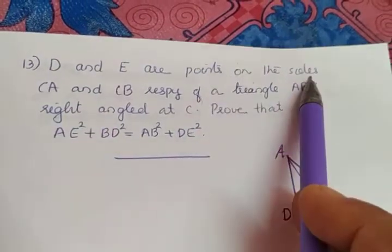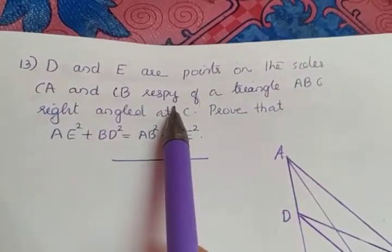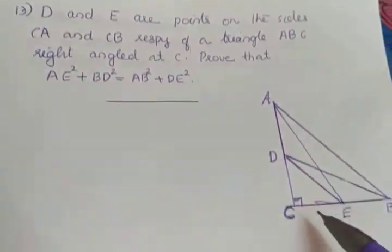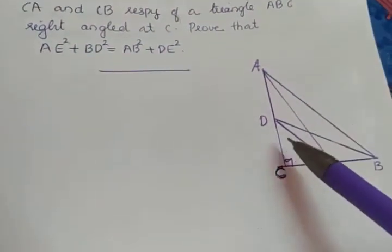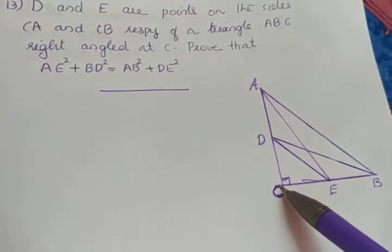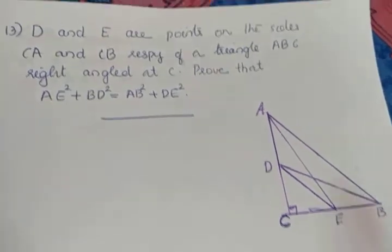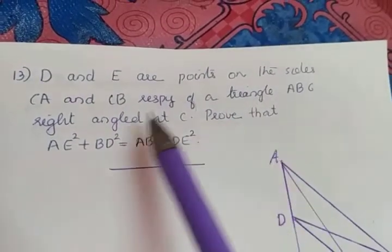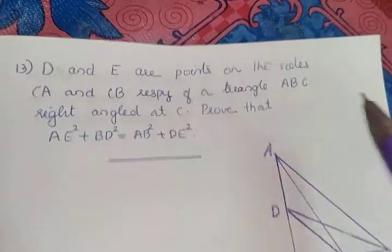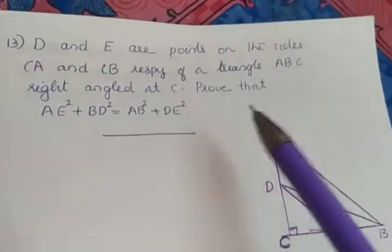D and E are points on the side CA and CB respectively of a triangle ABC. In the figure, D is a point on side AC and E is a point on side CB. It is given that the triangle is right angled at C, so angle C is 90 degrees.